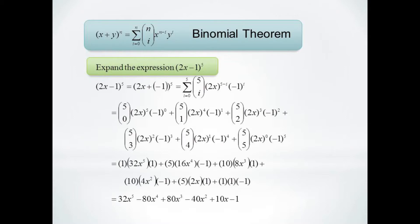This time we have the six coefficients starting at 5 choose 0 and going up to 5 choose 5. And now the number on the bottom will be our exponent for negative 1 and the difference will be the exponent for 2x.